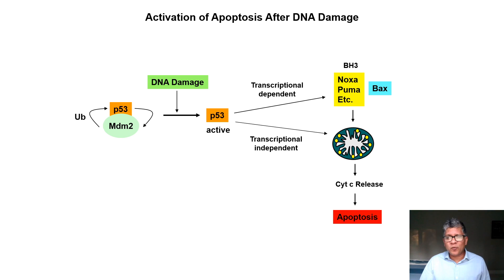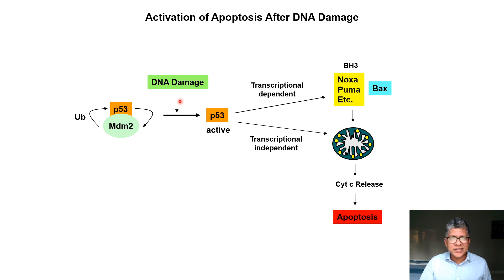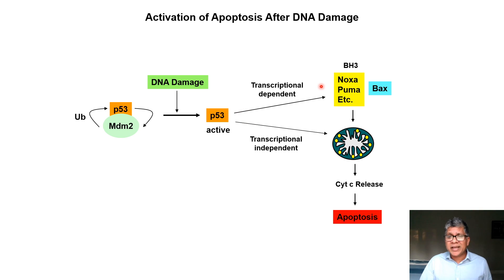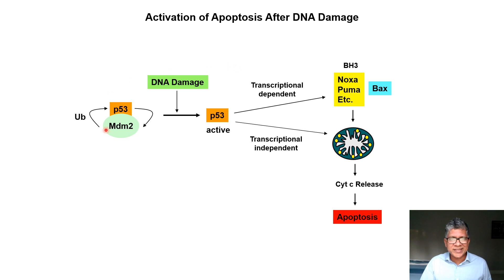Here's a specific example of DNA damage-induced apoptosis. P53 is a protein activated in response to DNA damage. P53 induces apoptosis via a transcription-dependent mechanism and a transcription-independent mechanism. The transcription-dependent mechanism involves P53 acting directly as a transcription factor to induce BH3-only proteins, in particular NOXA and PUMA, which then activate BAX to cause cytochrome C release. P53 can also directly translocate to the mitochondria and directly induce BAX activation and cytochrome C release.